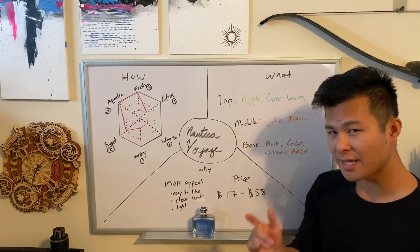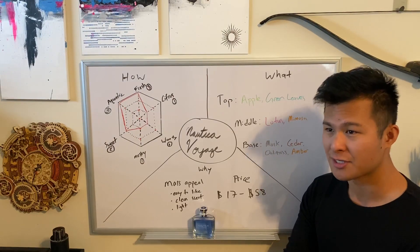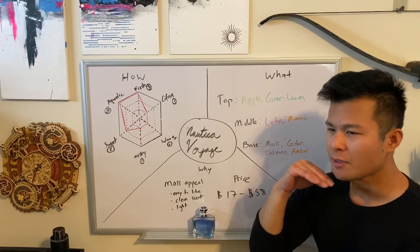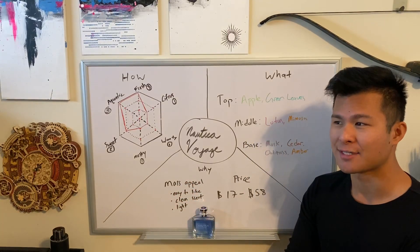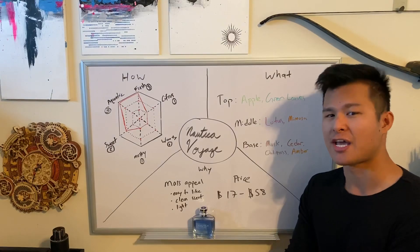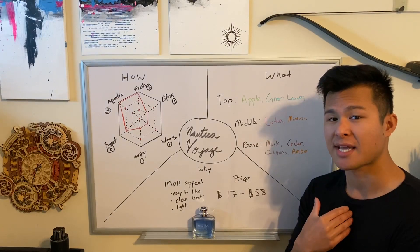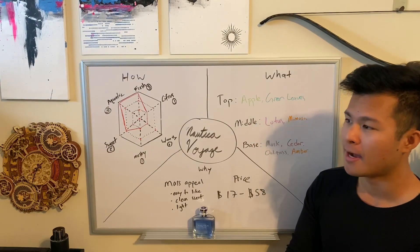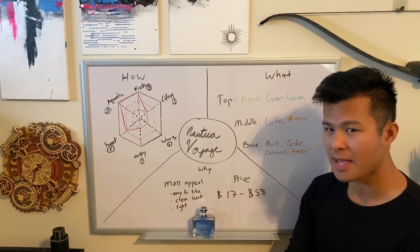It's a very linear scent, Nautica Voyage, meaning throughout the longevity of the scent it's not going to dynamically change too much, at least on my skin and other people's skins that have been annotated.